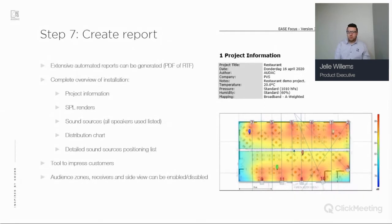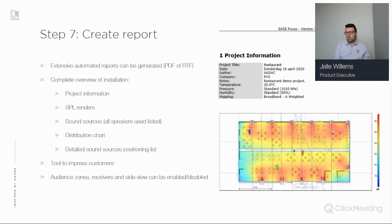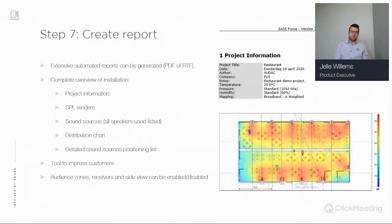You can also disable audience receivers or side views to make the report less extensive. I always advise including receivers and a side view, as the side view is also quite useful. Once you've gone through the seven-step guide, you'll have a report. It's actually quite simple to do an EASE Focus project — once you start you'll find it's very intuitive.